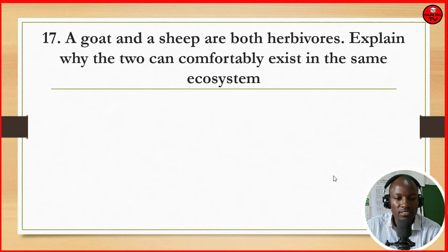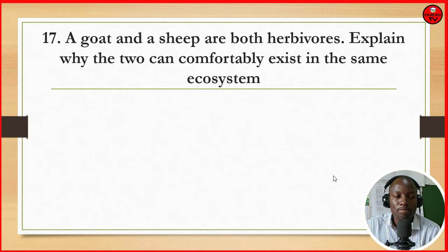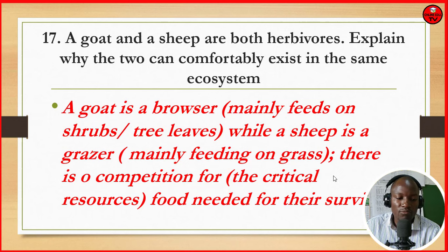Question 17: a goat and a sheep are both herbivores — explain why the two can comfortably exist in the same ecosystem. A goat is a browser that mainly feeds on shrubs, trees, and leaves, while a sheep is a grazer mainly feeding on grass. Therefore there is no competition for food and other critical resources in the habitat.